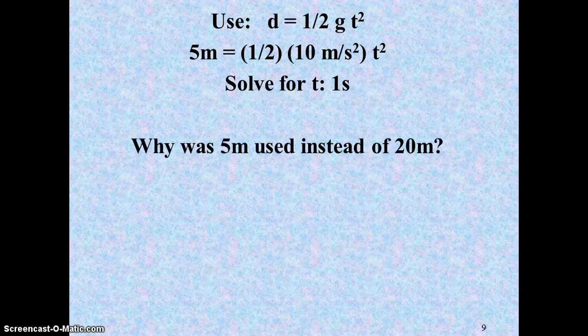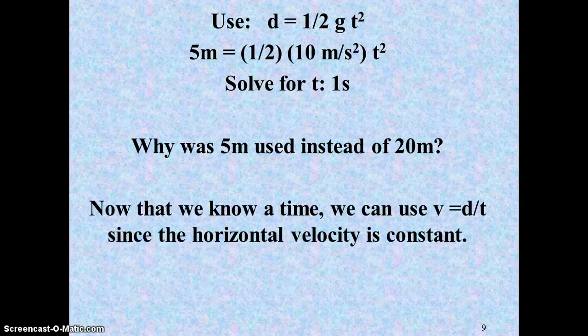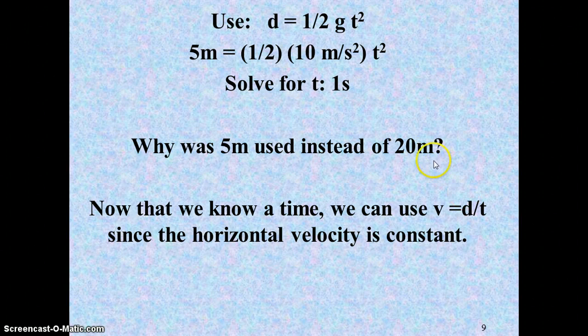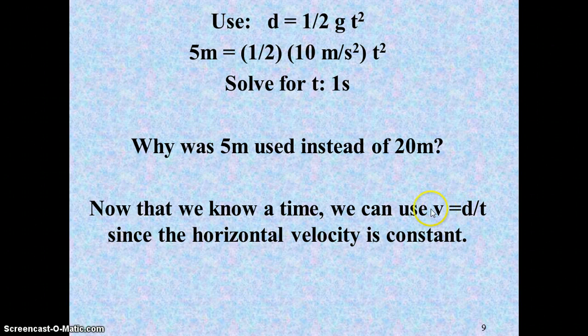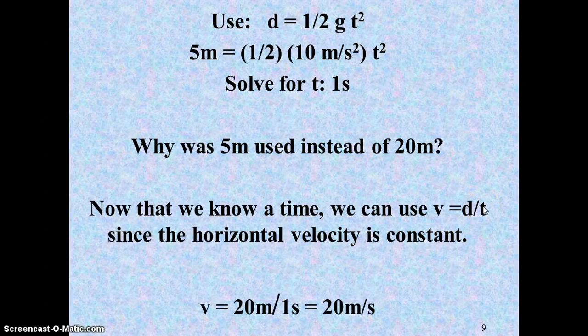Once we know that time, we can then move to the horizontal. Because horizontally, we know the velocity is constant. So we can simply do v equals d over t. We would want to use the 20 meters here for this distance because it's horizontal distance. This will solve for our horizontal velocity, which we know is constant throughout the fall. So 20 meters divided by 1 second, this thing must have been launched at 20 meters per second.